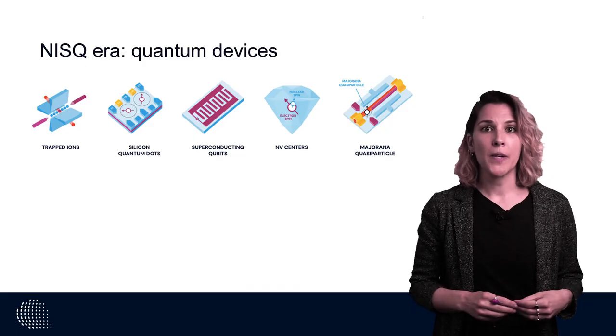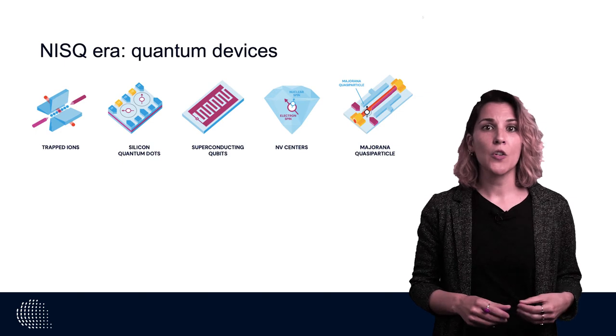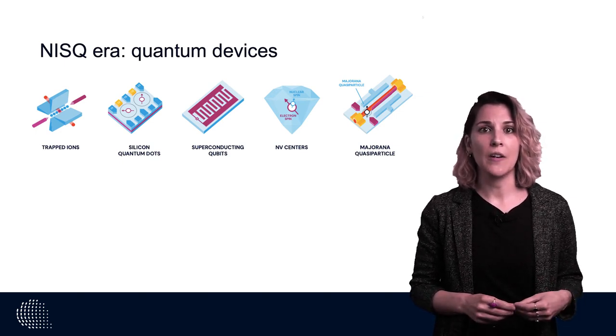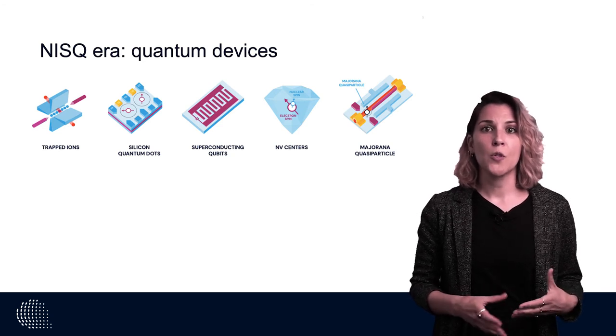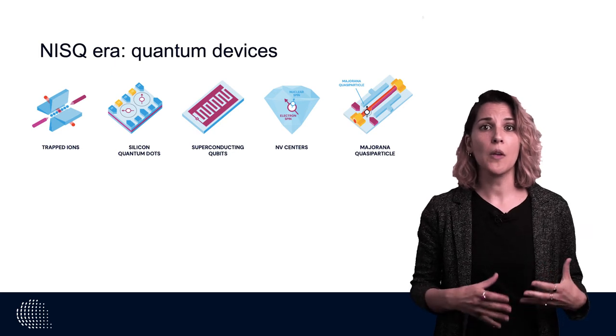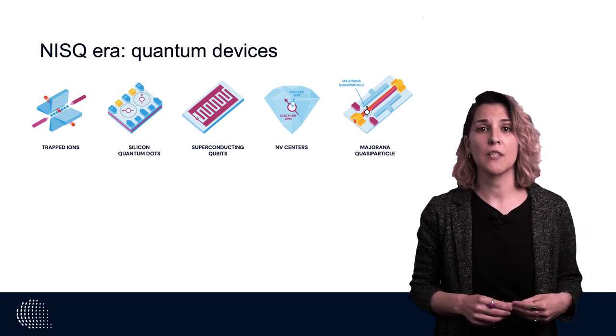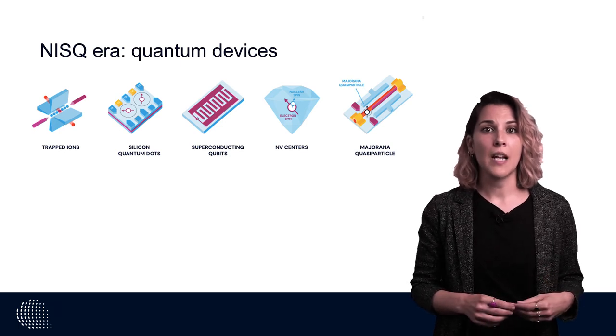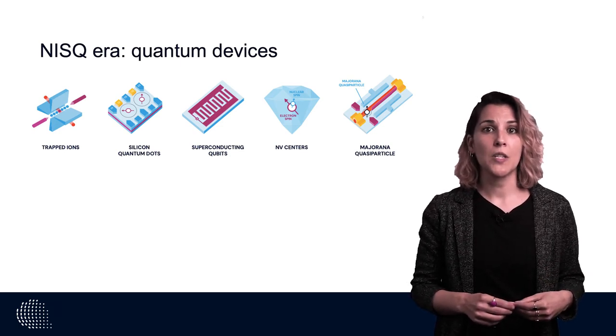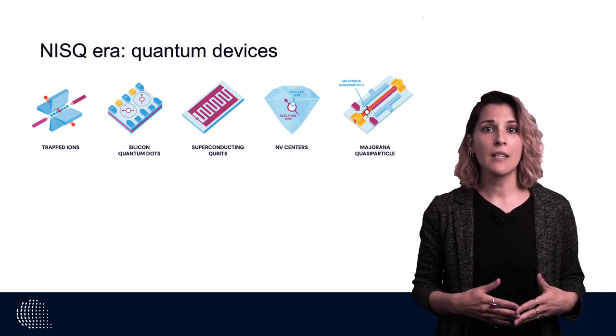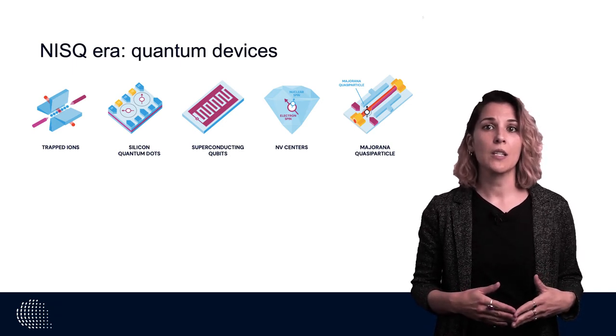As I mentioned previously, we are now in the noisy intermediate-scale quantum era, or just NISQ era. This term that was introduced by John Preskill refers to the current quantum processors and the ones that will be developed in the near future. Intermediate defines the number of qubits in the chip that ranges from 50 to a few hundred, whereas noisy emphasizes the fact that such a processor is error-prone.